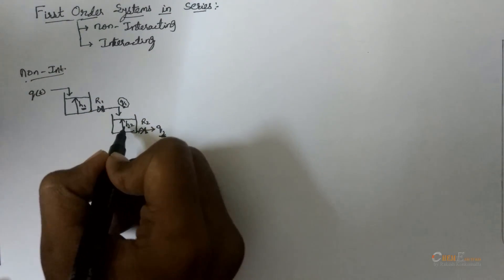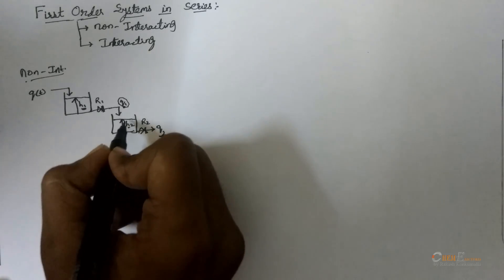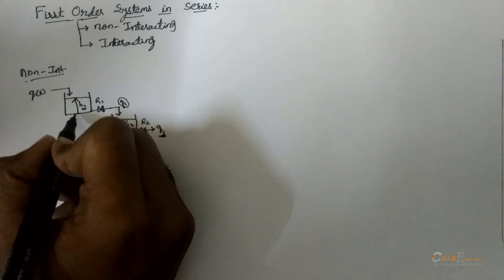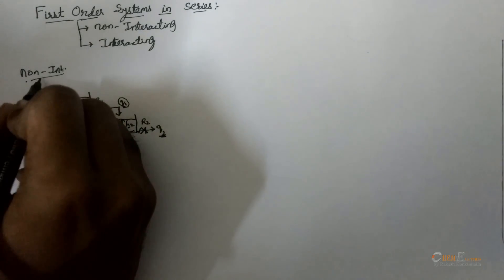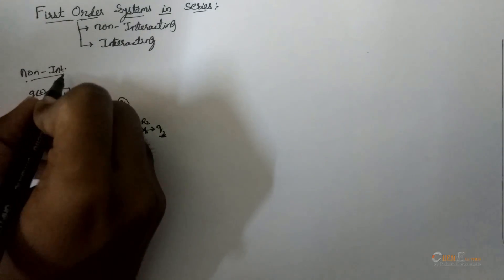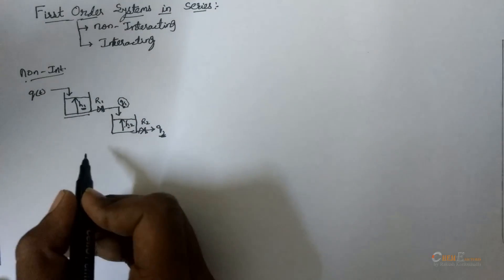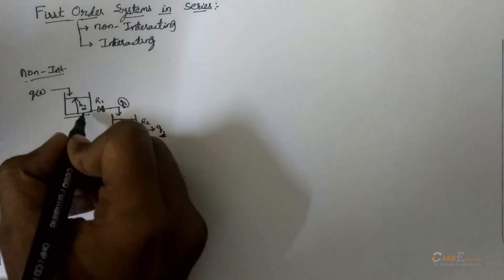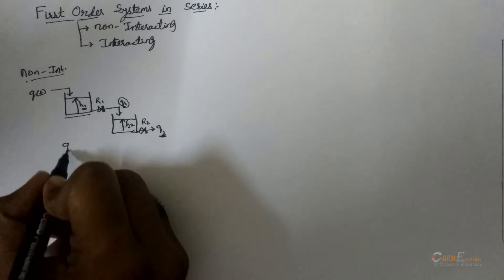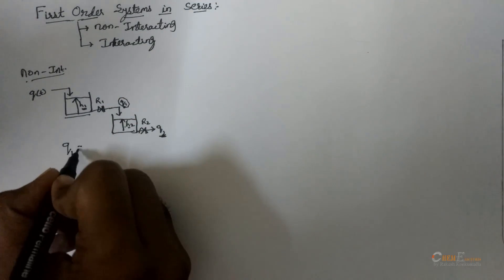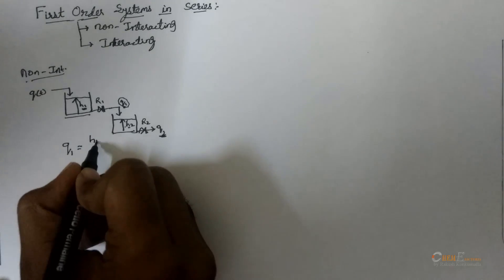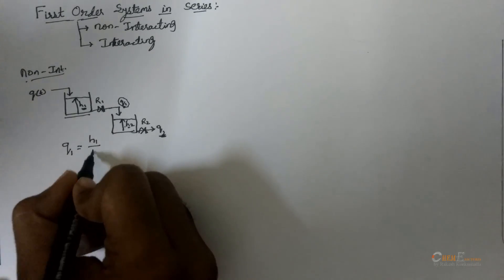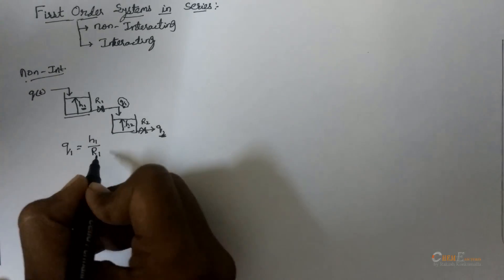In a simple way, if there are any changes in the downstream, it won't affect the upstream process. This is called a non-interacting system. Here, Q1 is only dependent on H1, so Q1 is equal to H1 by R1.